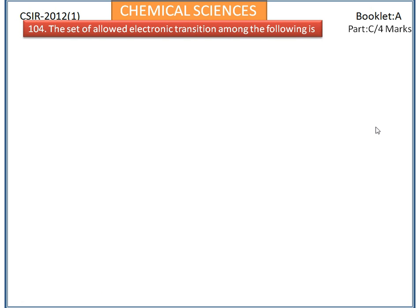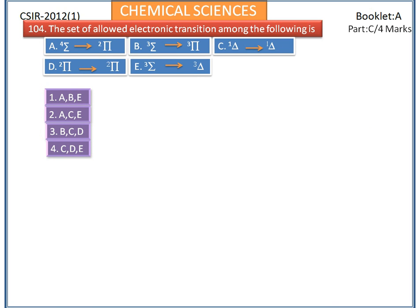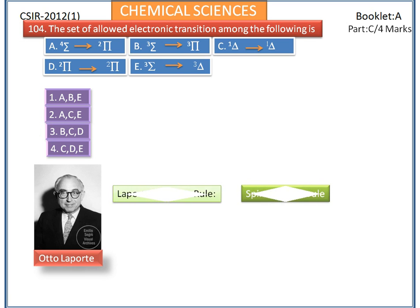The set of allowed electronic transitions among the following is to be determined. The transitions and options are shown here. The relative intensities of absorption bands are governed by a series of selection rules, based on the symmetry and spin multiplicity of ground and excited electronic states. Two of these rules are the Laporte selection rule and the spin selection rule.